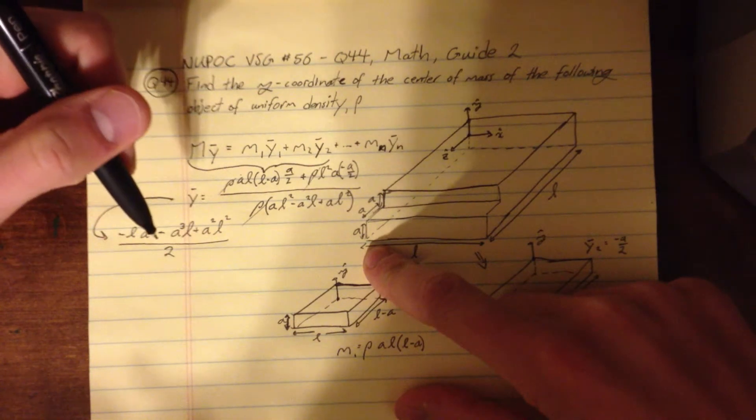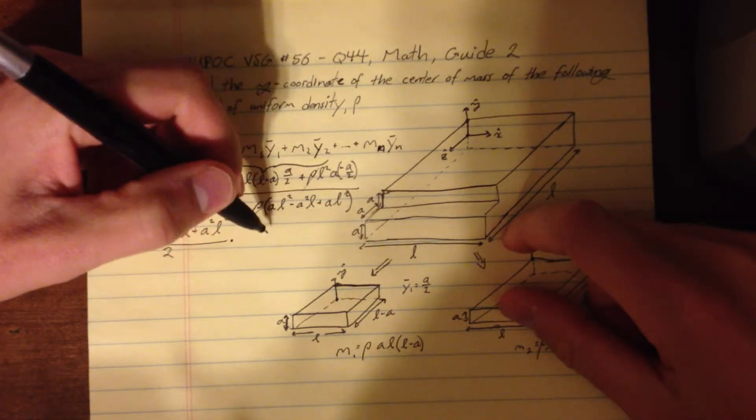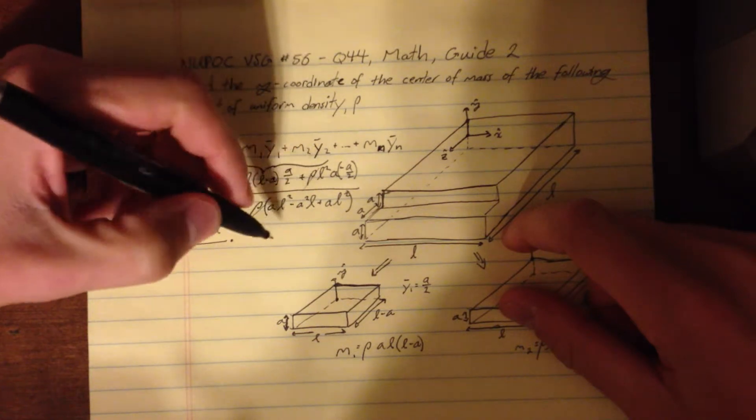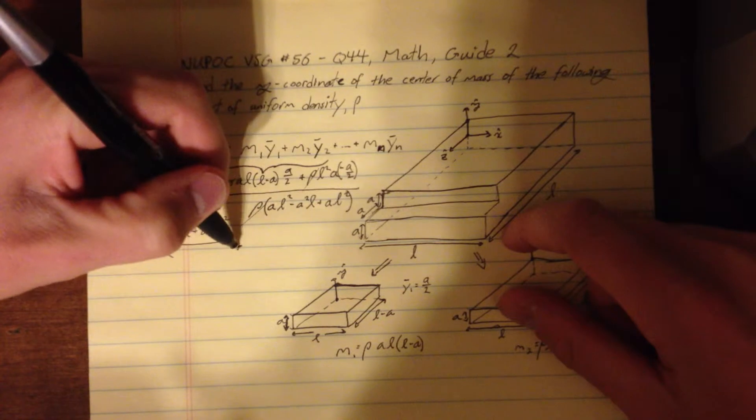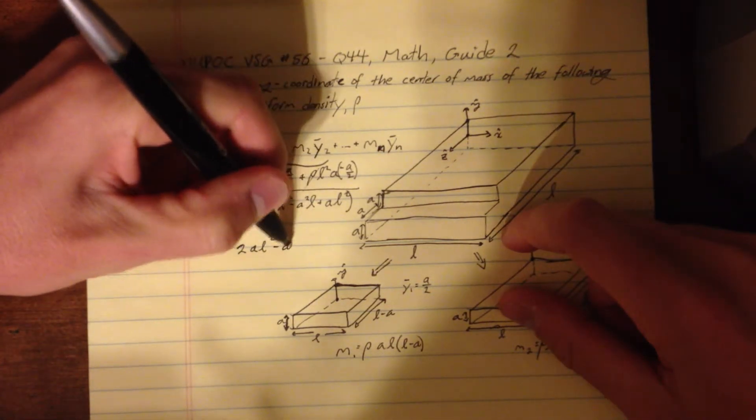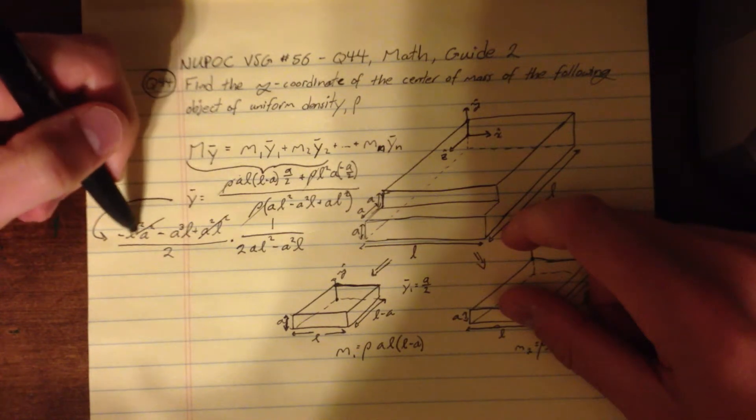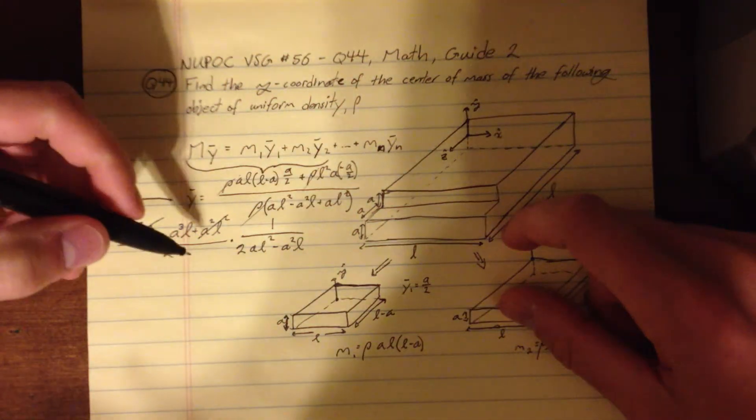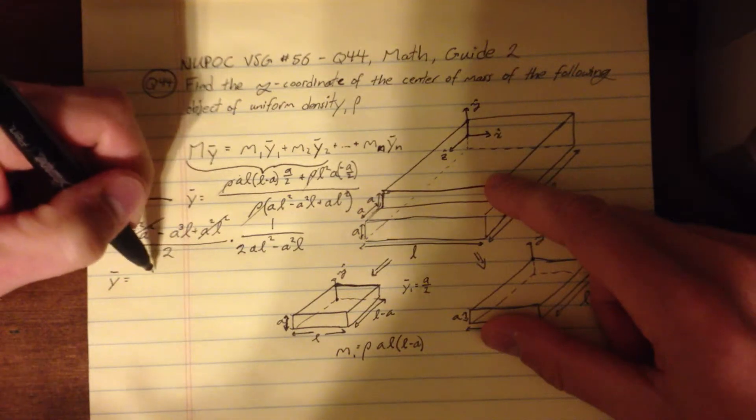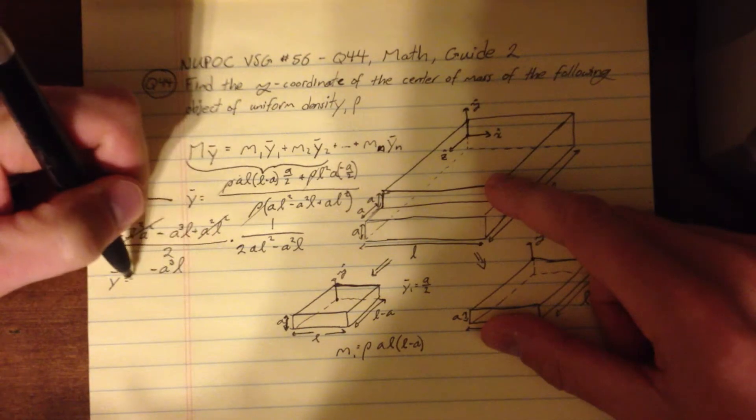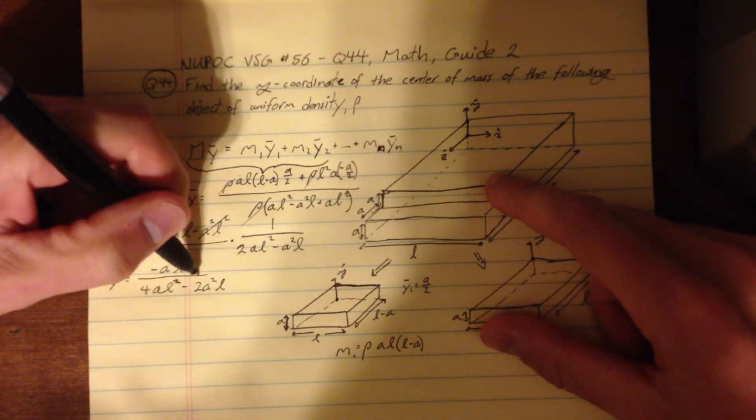And that's going to be multiplied by one over this whole thing here, and this is let's see, this is two a l squared minus a squared l, right. Okay, so right away we can see that we can get rid of this plus a squared l squared minus a squared l squared, and let's go ahead and multiply these two together, and so what we end up with is y bar is minus a cubed l over 4 a l squared minus 2 a squared l.